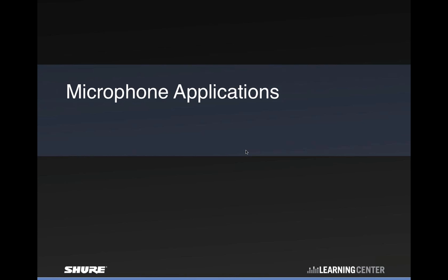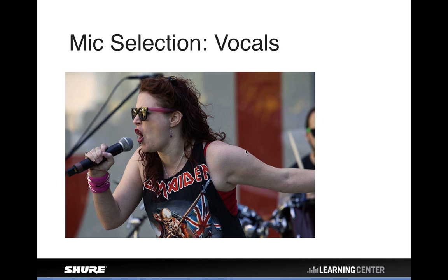Speaking of applications, let's start with one of the most common: the vocal mic. Here's a singer using a wireless version of an SM58. Why an SM58 for singing? Because it's a dynamic microphone that can handle extremely high sound pressure levels and has a nice directional pattern — so you're not picking up all the noise from the drummer, guitar amps, and everything else on stage. There are also many condenser microphones designed for vocal and singing applications.